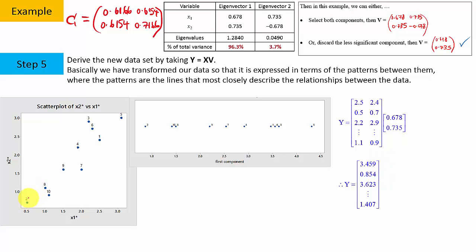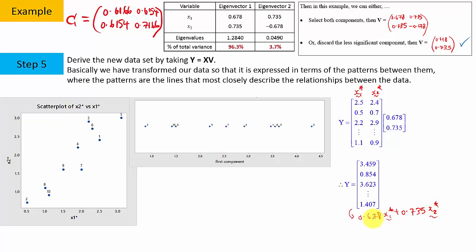From these plots, we see that a bivariate scatter plot has now become a univariate, single-dimension plot. Hence, PCA managed to reduce one dimension. Writing this as a linear combination: x1-star is the vector of observations on the first variable and x2-star on the second. The new variable is 0.678 times x1-star plus 0.735 times x2-star. Hence, PCA is a linear combination of the old variables to produce the new variable.